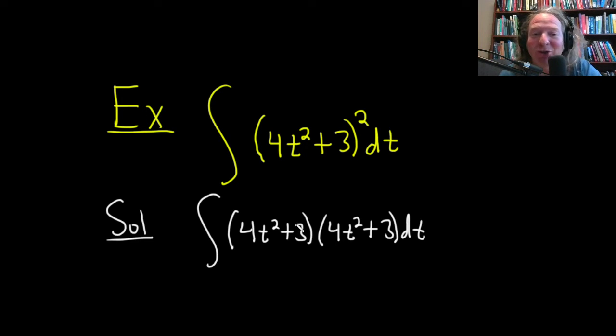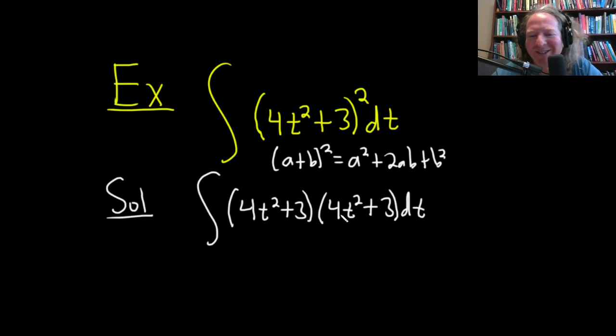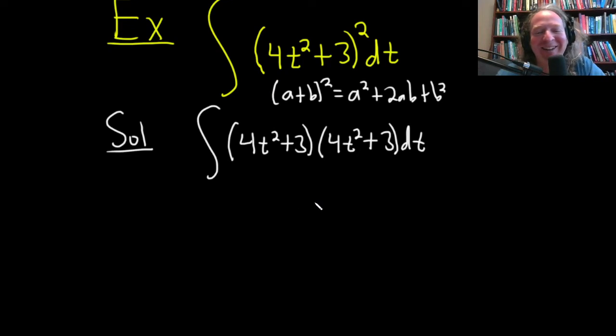And then what we can do is just basically distribute and then apply the power rule. If you're curious about the shortcut, I was going to apply the formula a plus b squared. That's equal to a squared plus 2ab plus b squared. So you can apply this formula to this here, and it's a little bit faster to do it that way. But we've started doing it this way. So let's just continue. All right, good stuff.